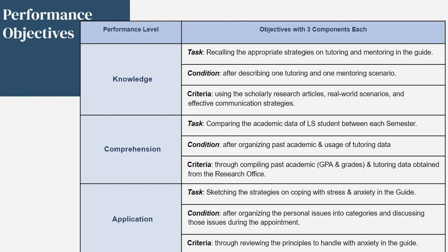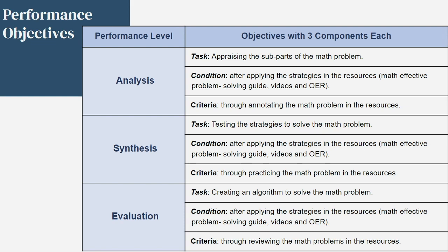For our performance objectives, there are six levels we are reaching for. In each level, we have a task, a condition, and criteria. For example, for comprehension, the task would be comparing the academic data of learning support students between each semester. The condition would be organizing past academic and tutoring usage data. We would complete this criteria through compiling past academic GPA, grades, and tutoring data obtained from the research office. Another example at the synthesis performance level: the task would be testing the strategies to solve the math problem, with the condition of applying strategies in the resources through the criteria of practicing the math problem in the resources.